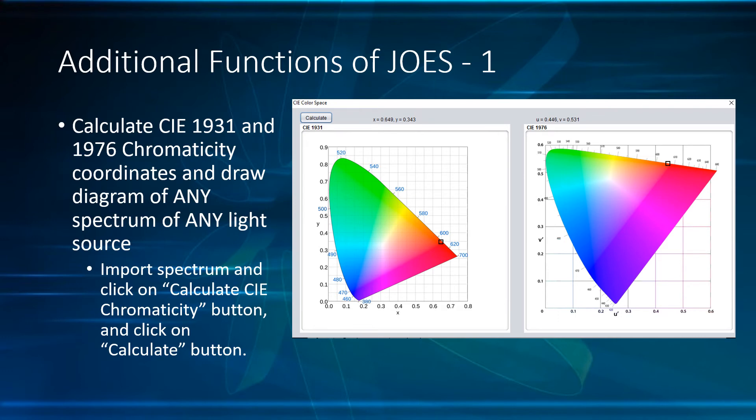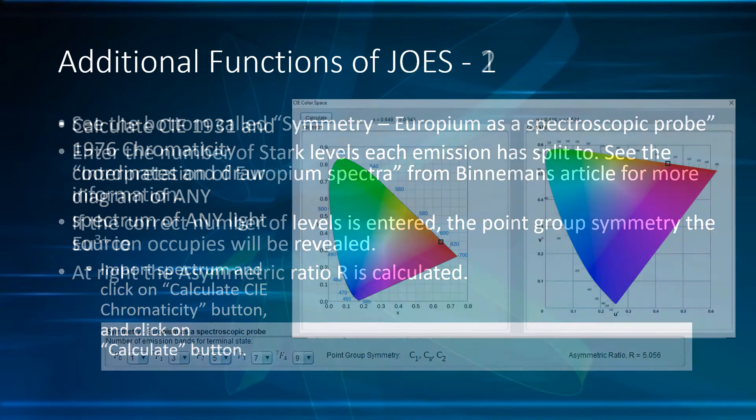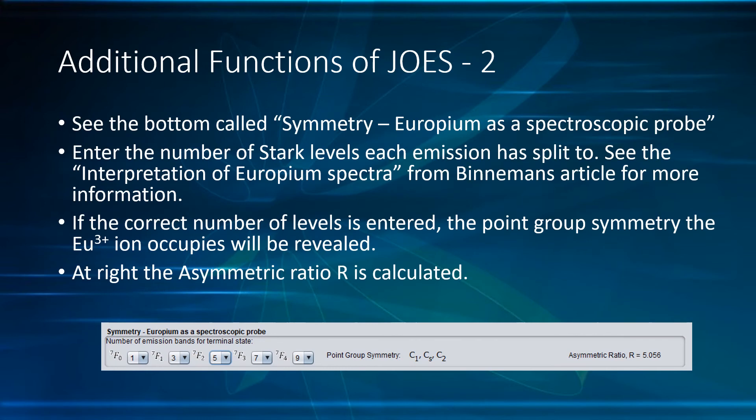Just import the spectrum and click on the blue button and once again on the Calculate button. If the spectrum is well resolved, you can see the number of peaks that exist for each transition. These are called the Stark levels, and they appear due to the crystal field splitting. In this way the symmetry around the Europium ion can be estimated. Also, the asymmetric ratio is calculated.